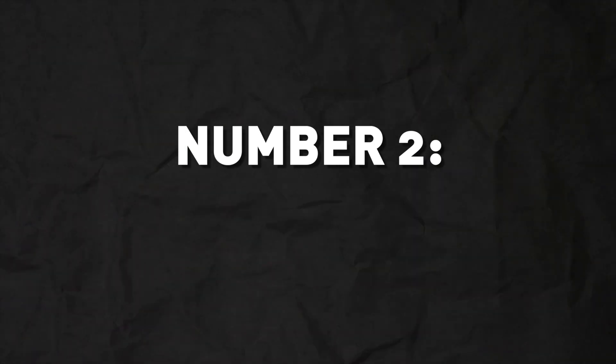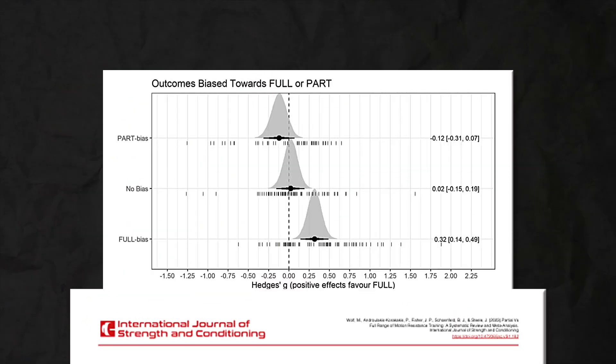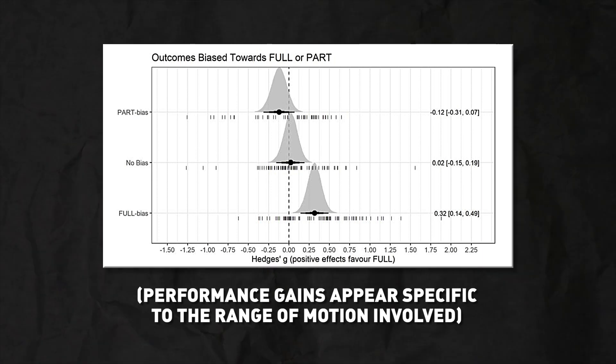The second area where we have evidence of specificity applying to performance improvements is range of motion. In my meta-analysis — my own, the one I wrote — we categorized performance outcomes as either full range of motion, partial range of motion, or neither. What we saw is that when a group trained the specific range of motion of the outcome, they saw better performance improvements. So if you're a powerlifter who wants to improve your squat to parallel, you should probably do most of your training within that range of motion.